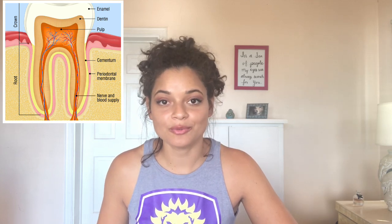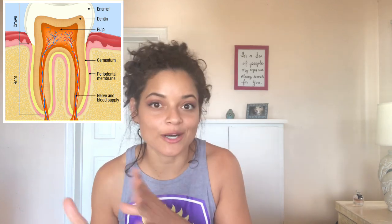The next layer is the cementum. The cementum is the surface layer of the tooth root. It attaches teeth to the alveolar bone by anchoring the periodontal ligament. The periodontal membrane slash ligament is just a collagen fiber that attaches the tooth to the bone — pretty much, it just keeps the tooth in place.